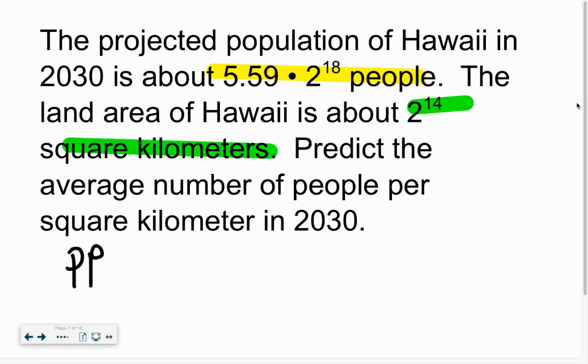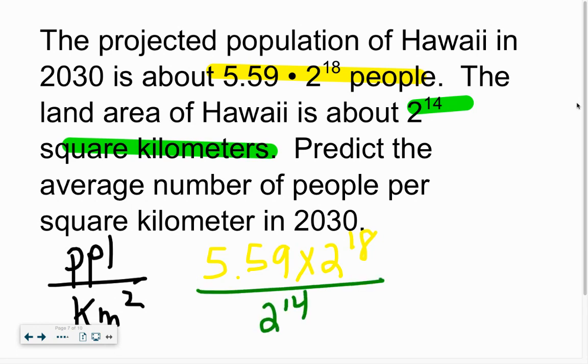So predict the average number of people per square kilometer in 2030. So we want to know the people per kilometer squared. So that little ratio helping us out, setting it up. What you're going to see then is, we're going to write it out just as we have that. 5.59 times 2 to the 18th. And then bringing in the kilometers, square kilometers, 2 to the 14th. Just like we've been doing before. Quotient of powers. Whatever has the same base. Don't worry about this other stuff over here. Just what has that same base, we're going to work with those. So keep the base the same, which means it's going to stay that 2. And then subtract those powers, subtract those exponents to get 4.